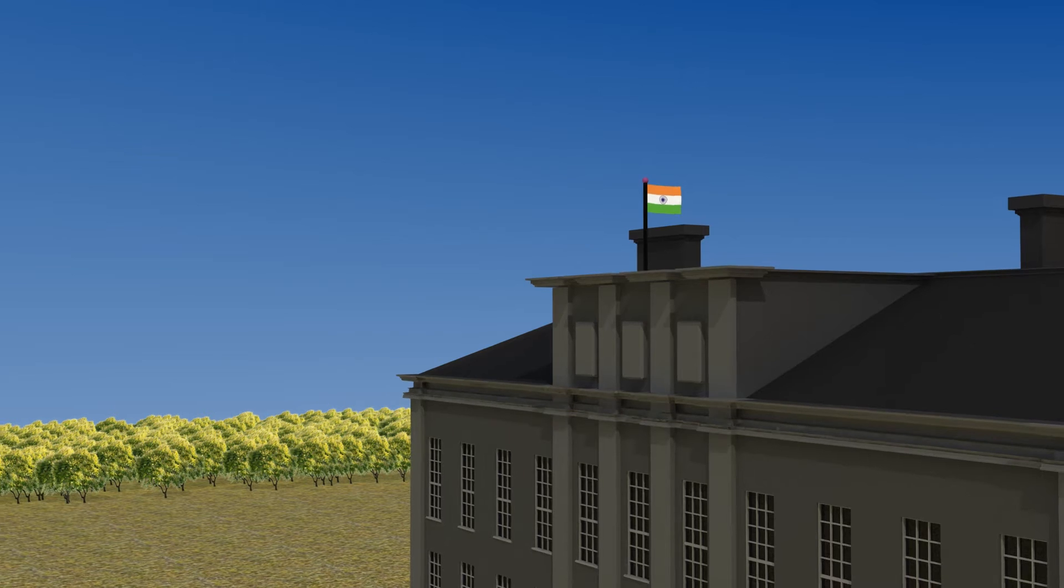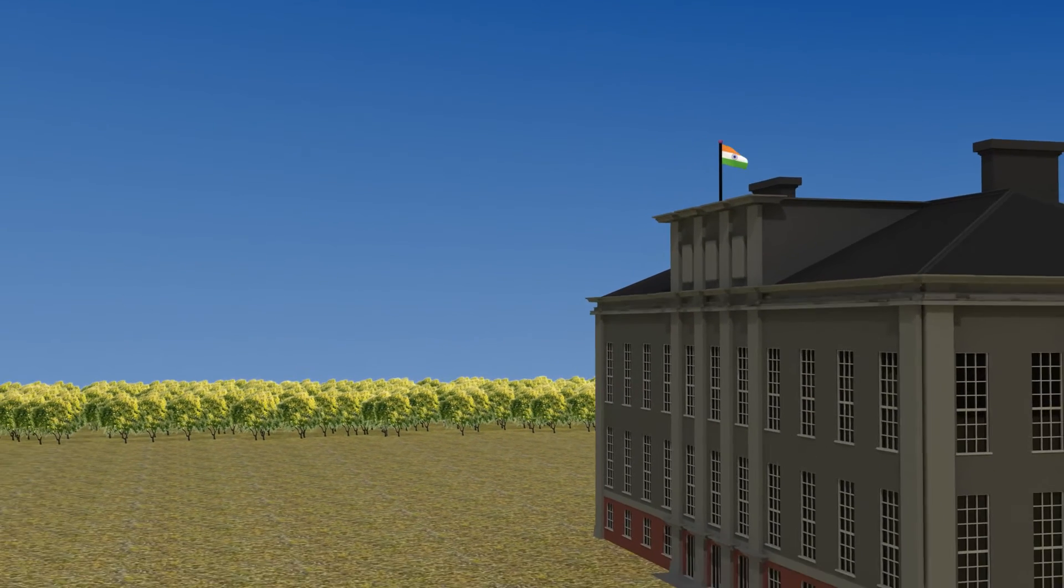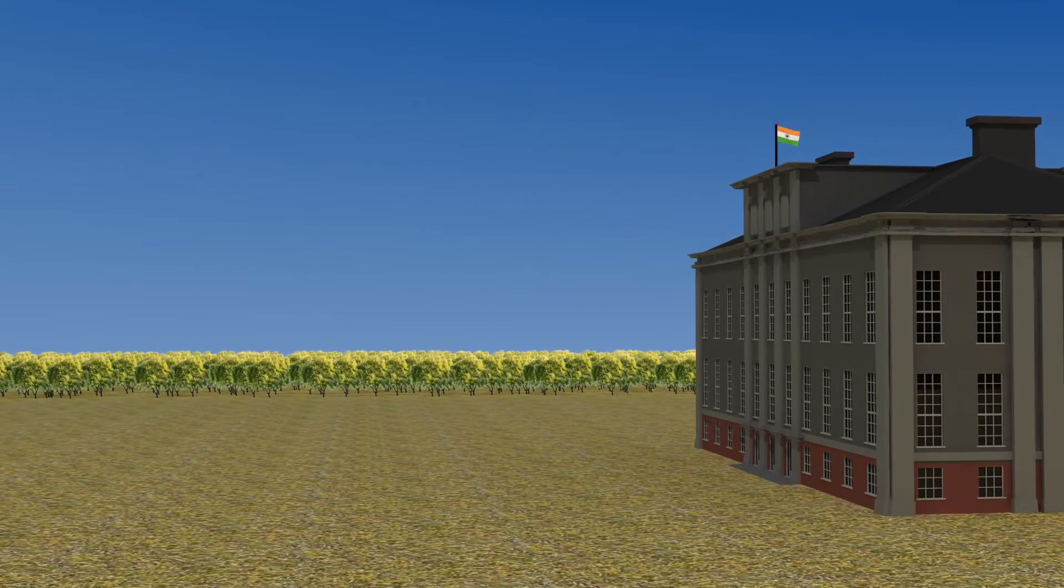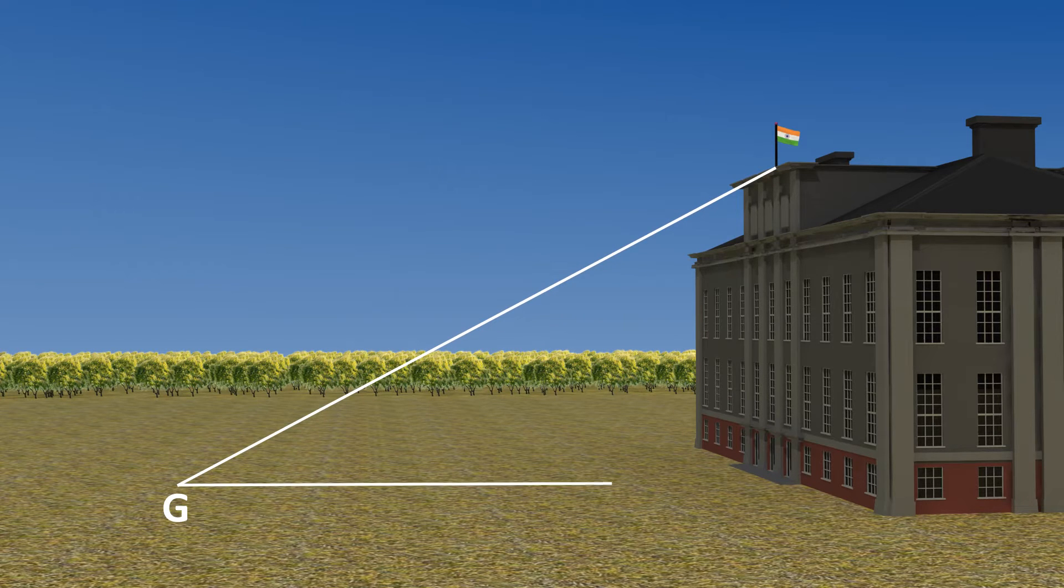Example 4. From a point G on the ground, the angle of elevation of the top of a 10 meter tall building is 30 degrees. A flag is hoisted at the top of the building and the angle of elevation of the top of the flag staff from G is 45 degrees.